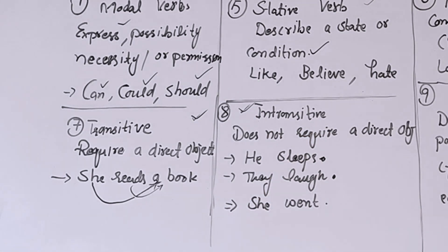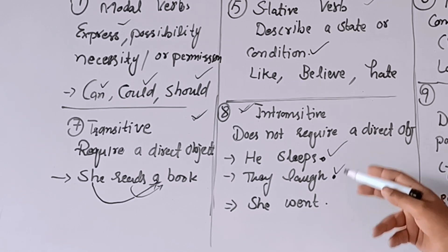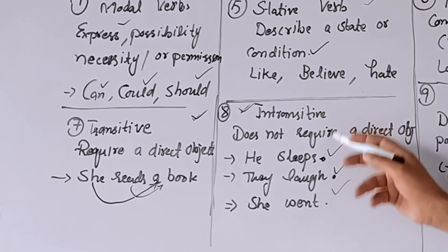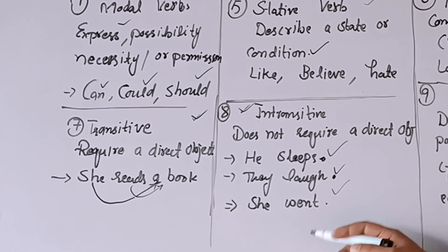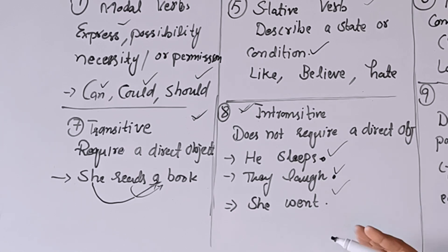Intransitive verbs do not require a direct object — یہ verbs خود سے ہی مکمل مطلب دیتے ہیں اور انہیں object کی ضرورت normally نہیں پڑتی۔ جیسے 'he sleeps'، 'they laugh'، 'she went'۔ Intransitive sentences کی passive voice نہیں بنتی — یہ confusion بھی آپ کو clear ہو چکی ہوگی۔